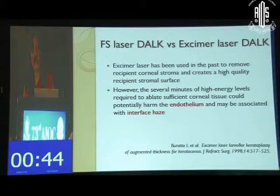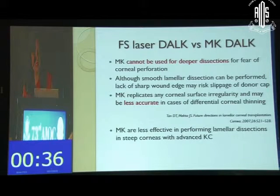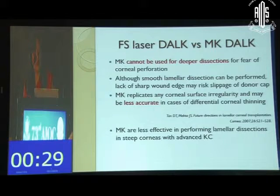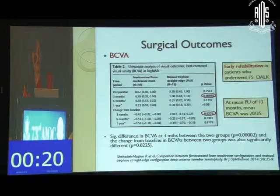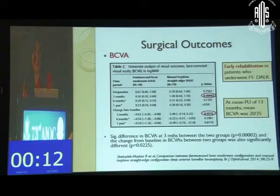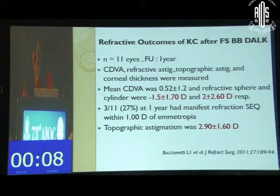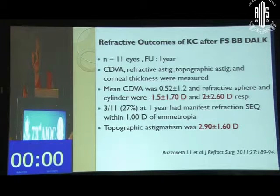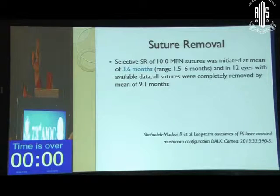The potential harm to the endothelium and interface haze from excimer laser smoothing remains unknown. The microkeratome is less effective in steep corneas with advanced keratoconus, where femtosecond laser may play a role. Another study showed significantly better best-corrected visual acuity at three months but no difference at six months and one year. A study of eleven eyes on refractive outcomes after femtosecond big bubble DALK found astigmatism reduced to less than 3 diopters, with topographic astigmatism also reduced.